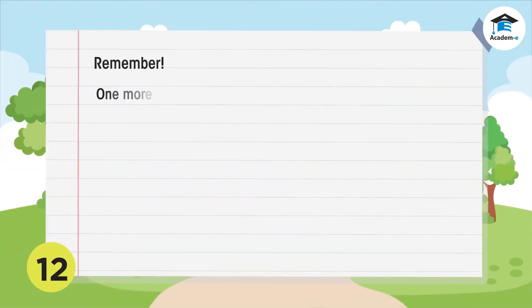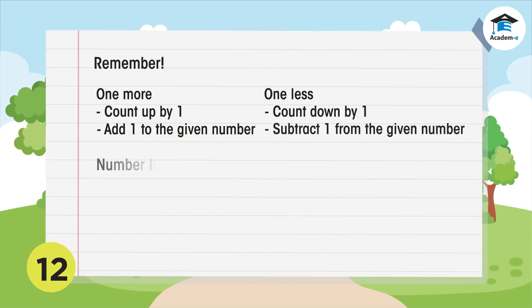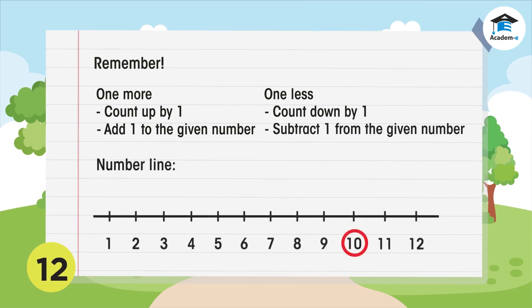Remember: to get one more than a number, you simply count up by one or add one. To get one less than a number, you simply count down by one or subtract one. A number line is useful in showing one more and one less than any given number.